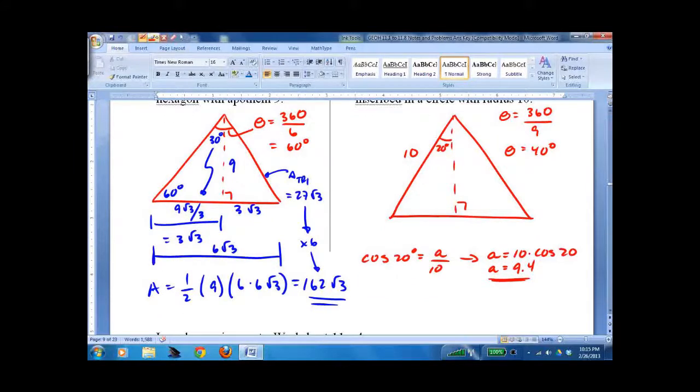Got to figure out the length of the side. We'll call this x for the time being. Sine of 20 equals x over 10. X equals 3.4. Put x up here so I can do this. Whole side is equal to 6.8.